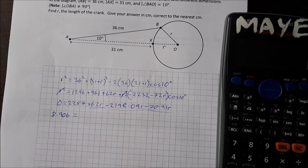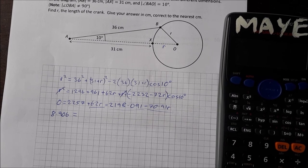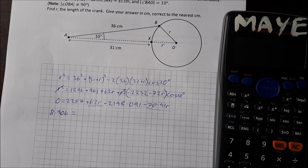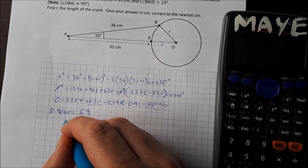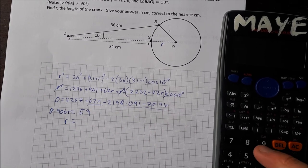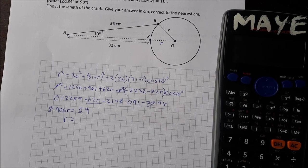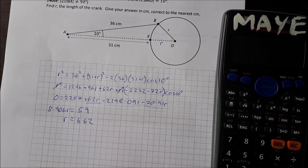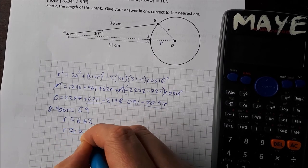8.906 OR is equal to 2257 minus 2198 which is 59. OR then will be 59 divided by 8.906 which is 6.62. They want it correct to the nearest centimeter so OR is approximately equal to 7 centimeters.